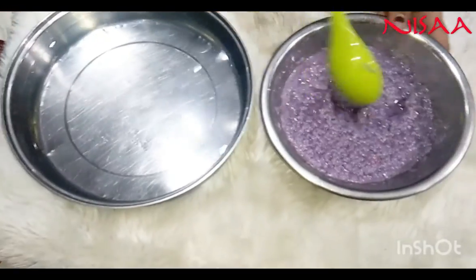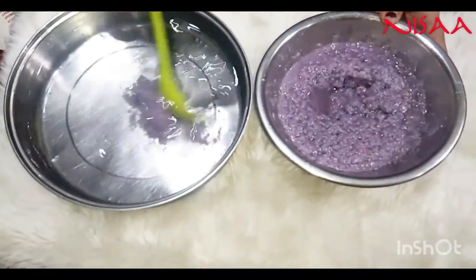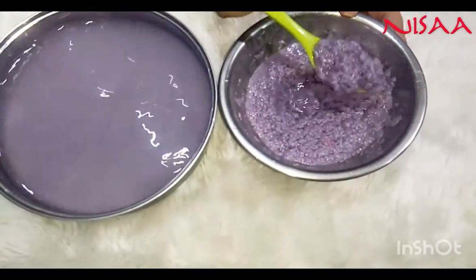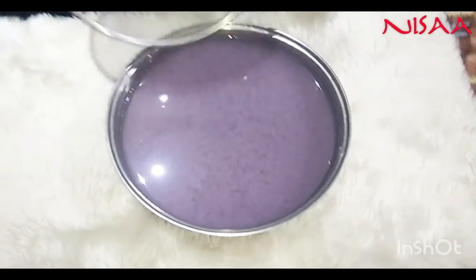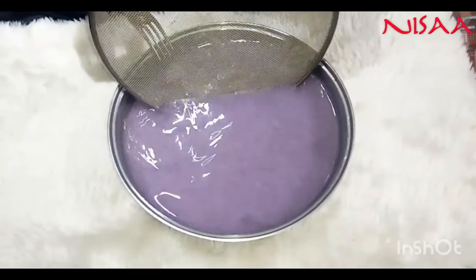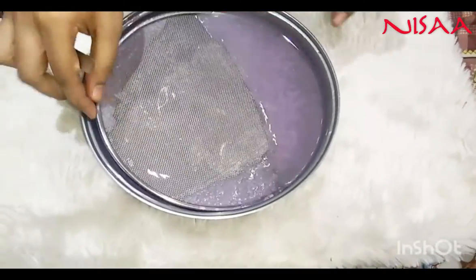Now, take a bowl of water and add three tablespoons of the pulp in it. Take a strainer and dip it inside the bowl.